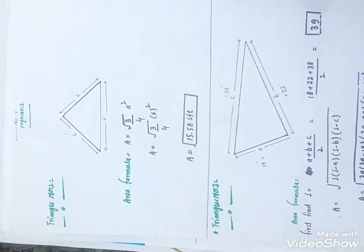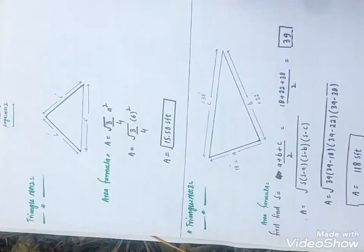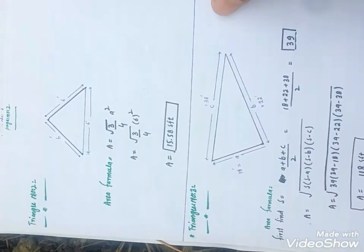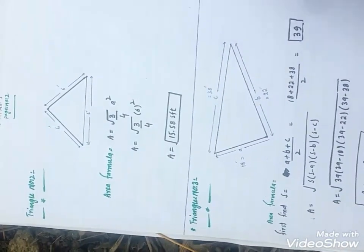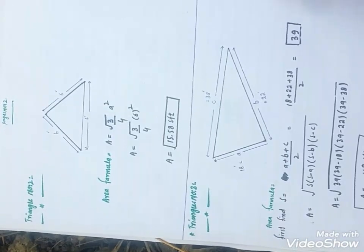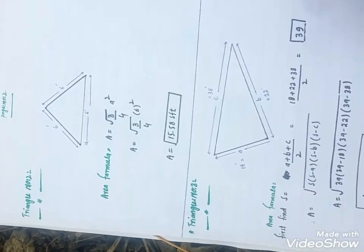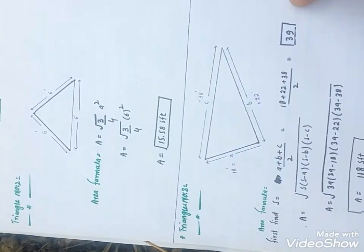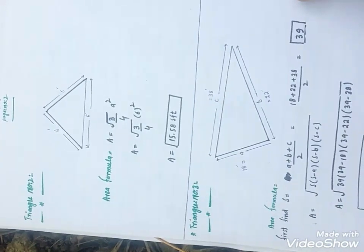This is also a type of triangle which is called an equilateral triangle. The formula used for this triangle is: Area = (√3 / 4) × a², where a = 6.